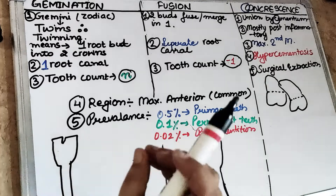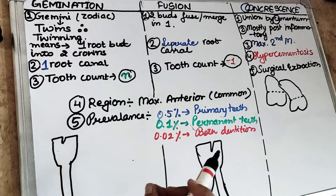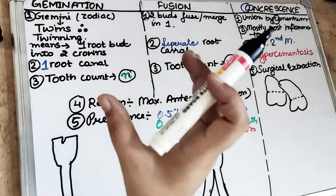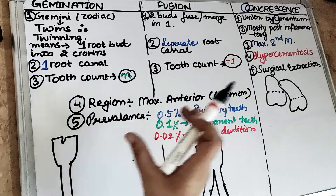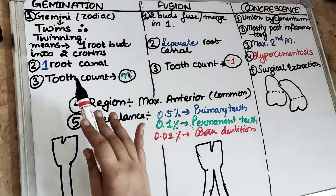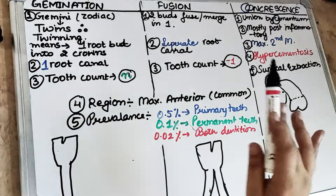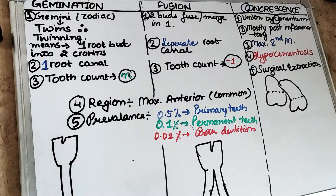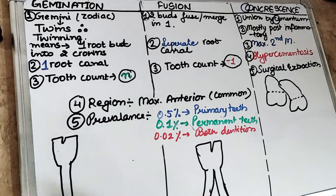Welcome to our 5 in 5 series, wherein we cover each topic under 5 headings in 5 minutes. Today's topic we are going to cover are 3 topics: gemination, fusion, and concrescence. Before we get started, make sure you subscribe to our channel and click on the bell icon so that you don't miss any of our future video lectures.